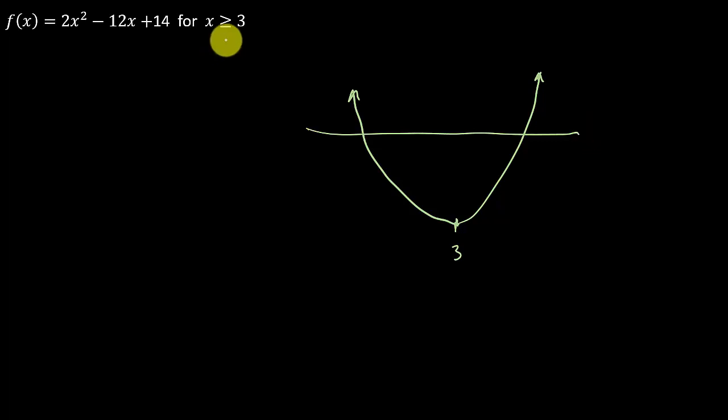Okay, well what this x greater than or equal to 3 does is that says we're only working with values larger than 3. So we're only working with this part of the graph. So we're not even going to use that part. And you can see, once we've gotten rid of this side over here, it's now one-to-one. So what we've done here is we've restricted the domain.